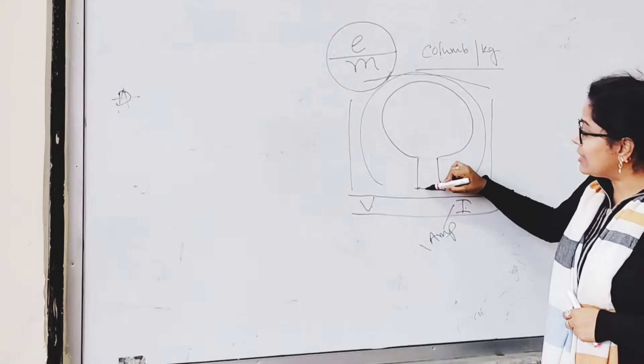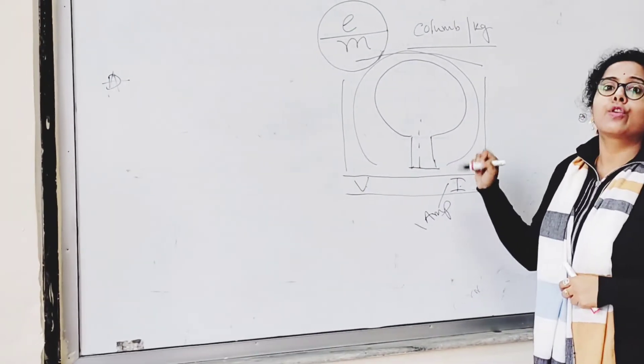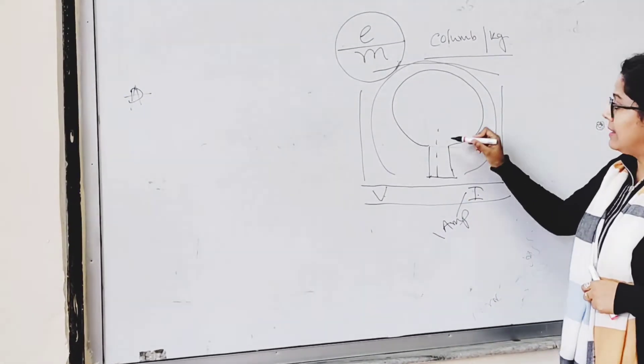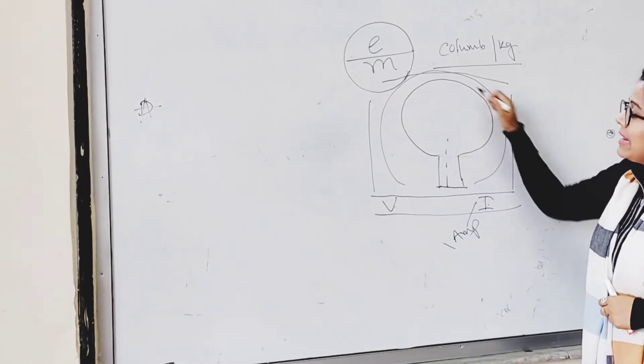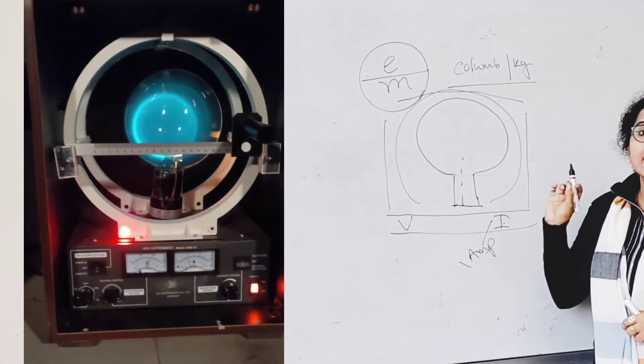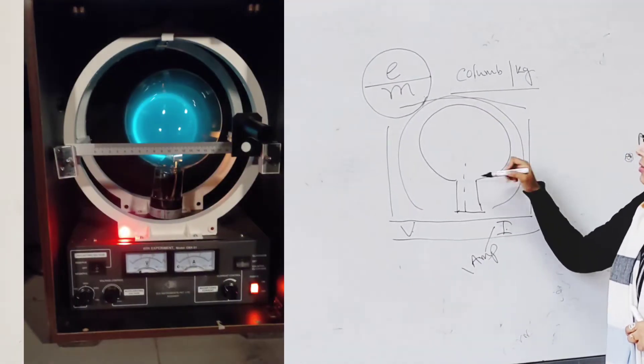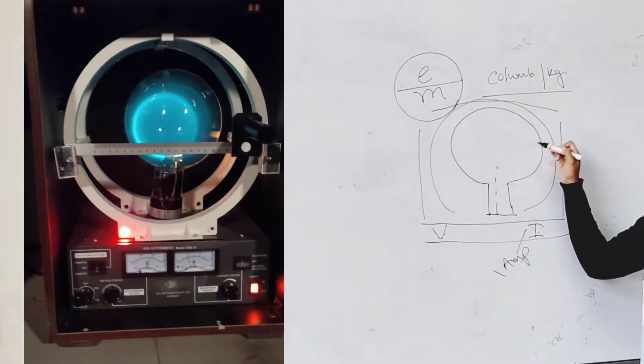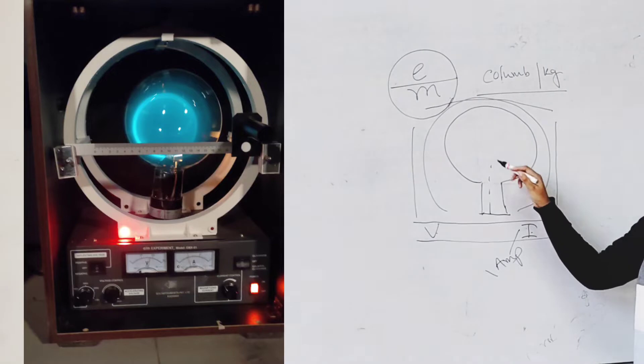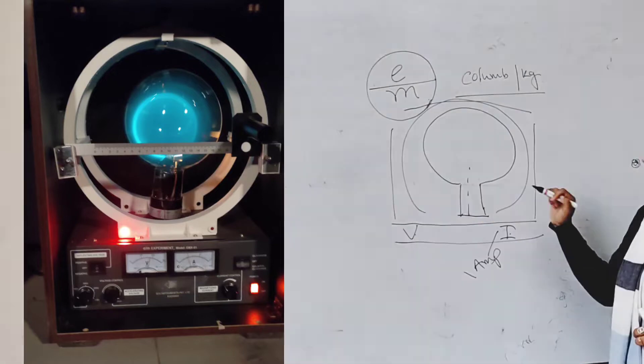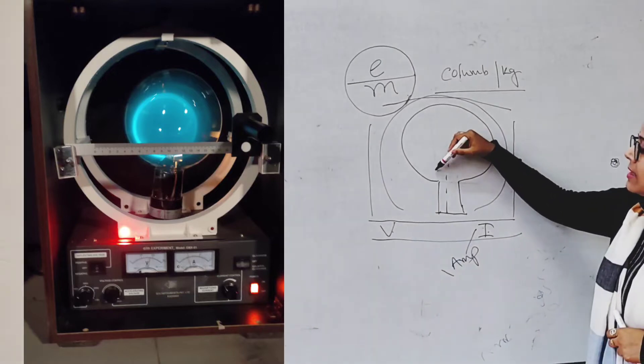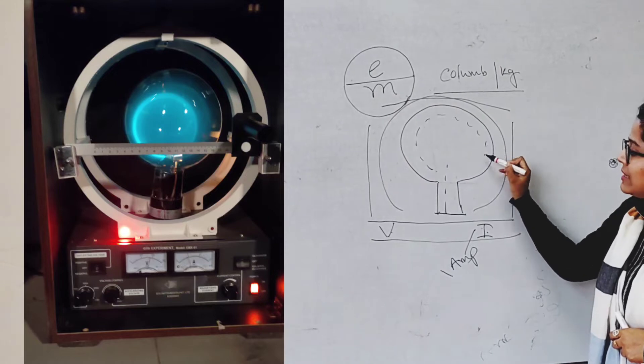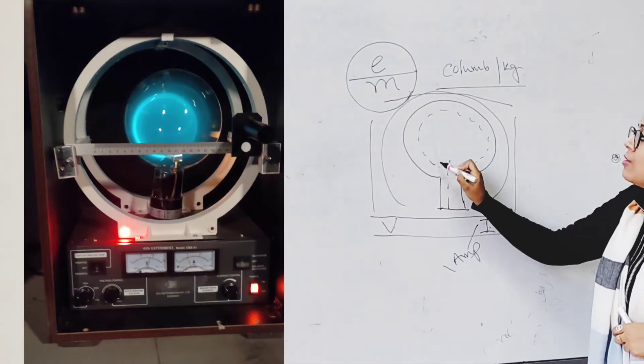Due to that electrons will be released from the cathode and they are going to collide with the Helium gas that is filled with this tube. The Helium gas molecules will be collided with electrons and we are going to see the charge release or energy release in the form of circular ring.